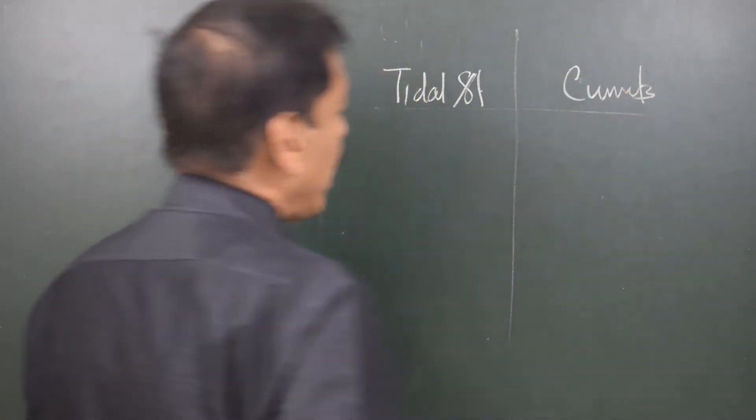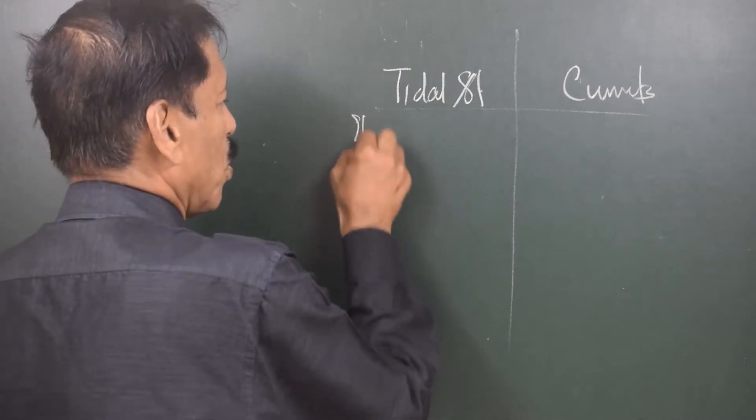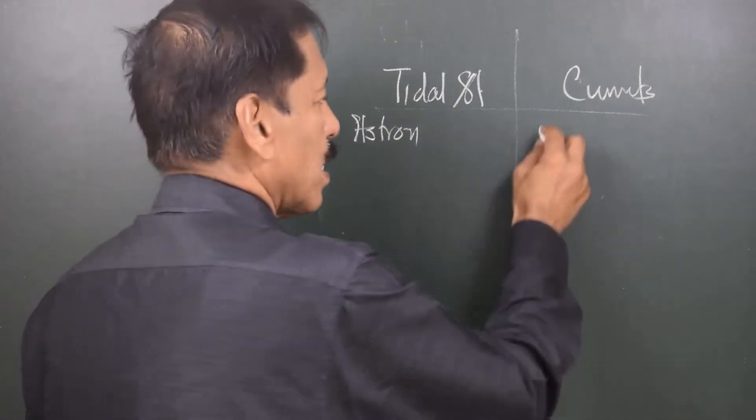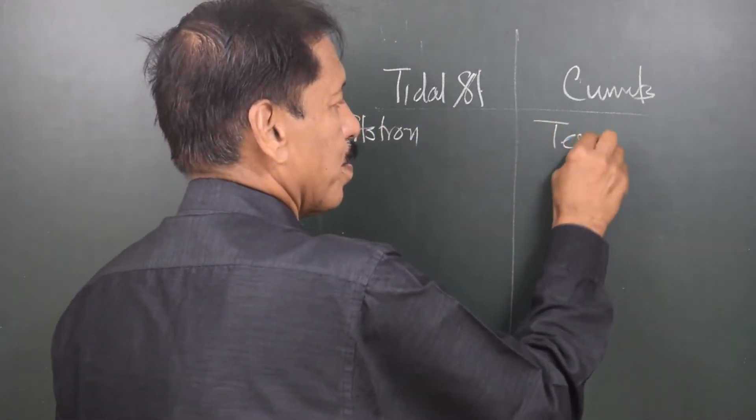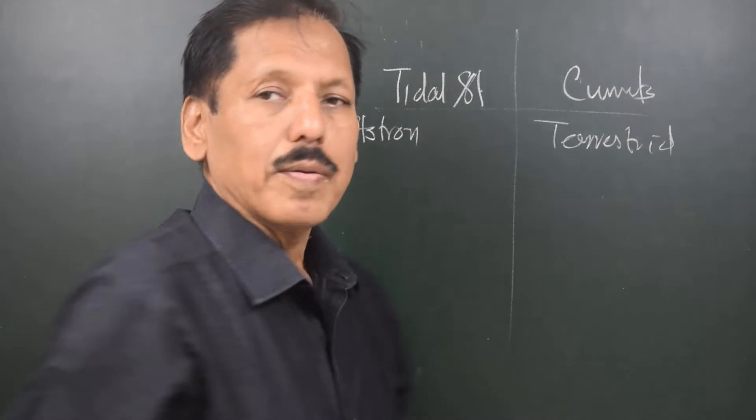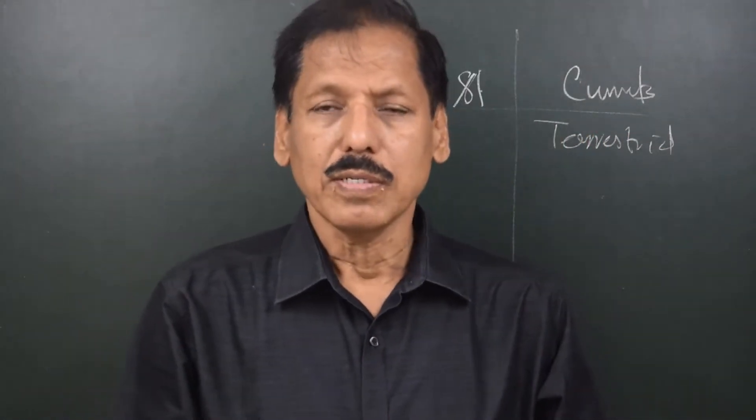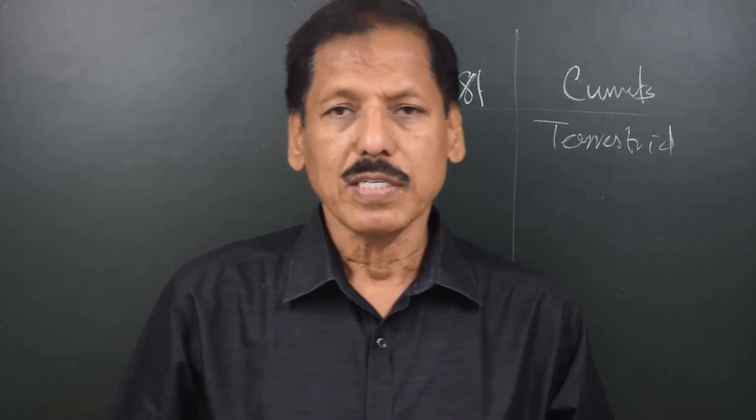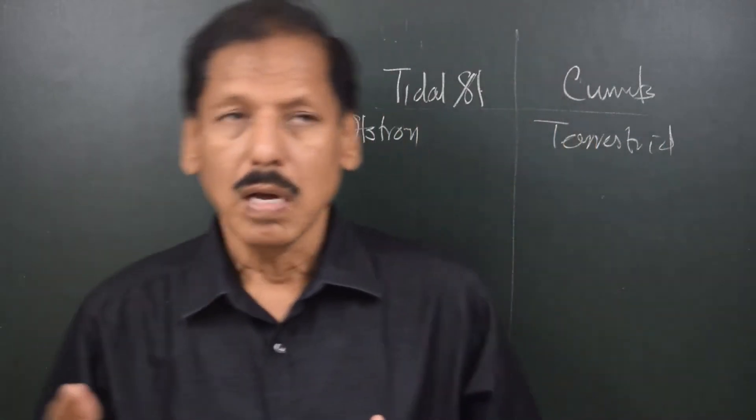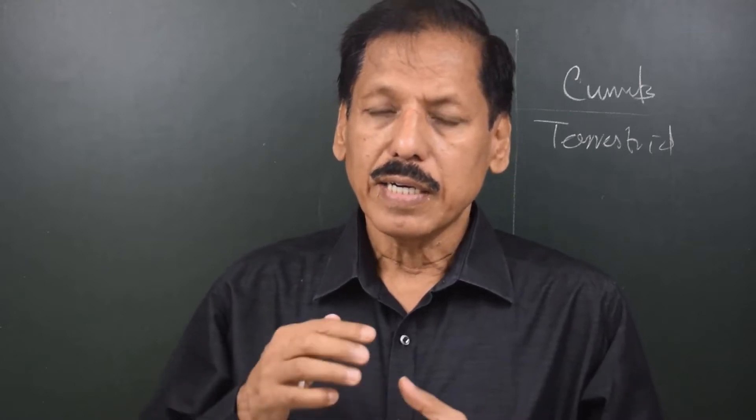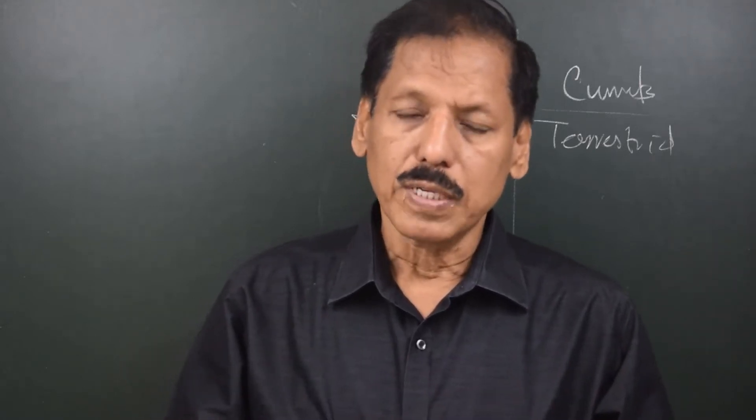The tidal streams are astronomical in origin, whereas currents are terrestrial in origin. Tidal streams are created by the gravitational pull of the sun and moon, planets, etc., and tidal streams are an effect of the tides.